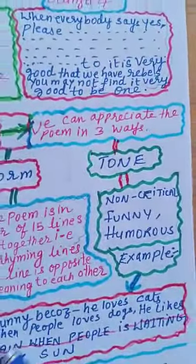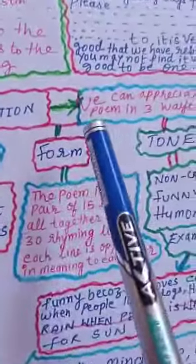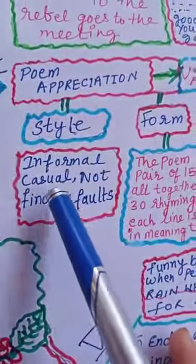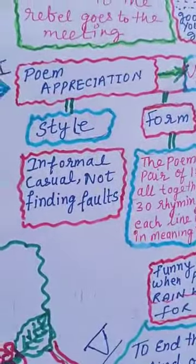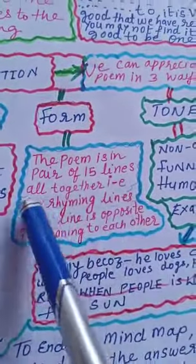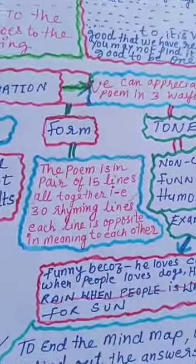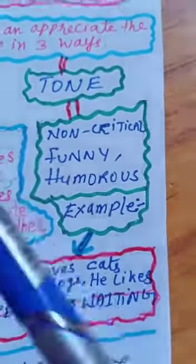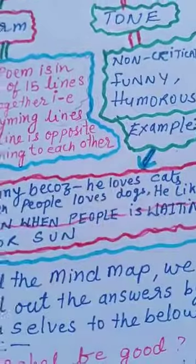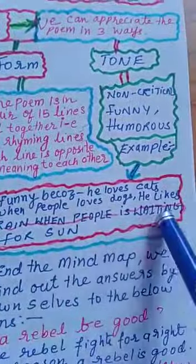After analysis of the poem, we can appreciate it in three ways: style, form, and tone. The style of the poem is informal, casual, and not finding faults. The poem is written in pairs of 15 lines, all together 30 rhyming lines, where each line is opposite in meaning to the other. The tone is non-critical, funny, and humorous. For example, it is funny because the rebel loves cats when people love dogs, and he likes rain when people are waiting for sun.